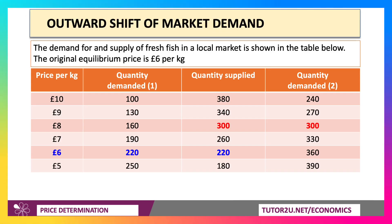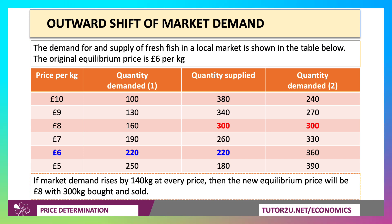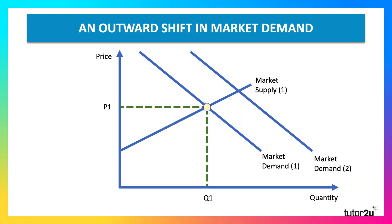Sometimes demand can shift outwards. Here's the demand for and supply of fresh fish in a local market. The equilibrium price is £6, where demand and supply are equal to 220 units. Then we see there's an increase in demand — an increase of £140 at all price levels — and therefore the new equilibrium will be where 300 kilograms are bought and sold at £8. So an outward shift of demand causes the equilibrium price to go up and quantity supplied to expand. The demand curve shifts out in the market, causing the market to move towards a new equilibrium with the price rising to P2 and quantity expanding to Q2.